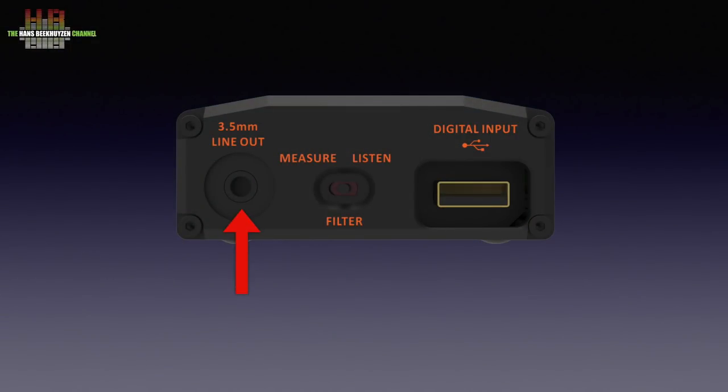On the left, the fixed level line output. In the middle, a switch that offers two filter settings: one minimum phase budget filter that is optimized for listening and a linear phase transient align filter for measurements.